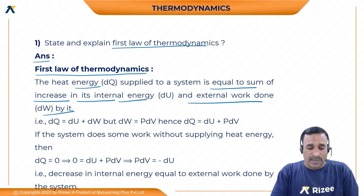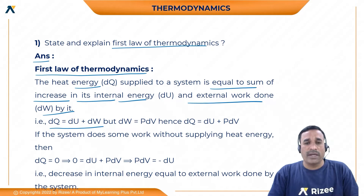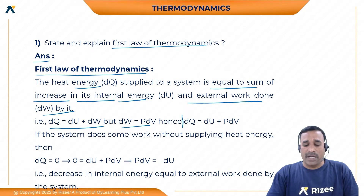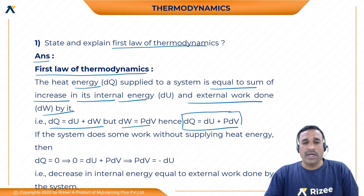Mathematically, we can write: dQ is equal to dU plus dW. And dW is equal to pdV. So the first law of thermodynamics can also be written as dQ is equal to dU plus pdV.